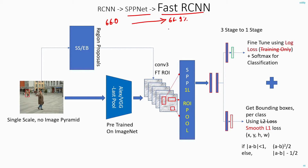Fast RCNN is 146 times faster than RCNN. SPPNet is around 20 to 24 times faster than RCNN. But this Fast RCNN network is 146 times faster than RCNN. That is the biggest advantage of this network.